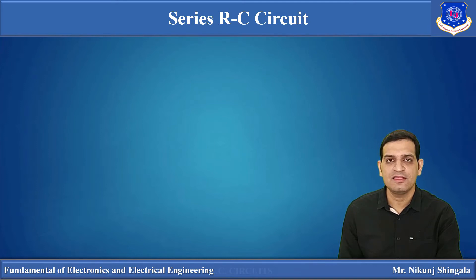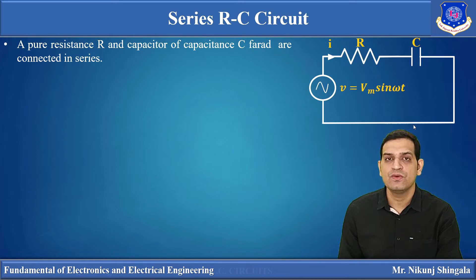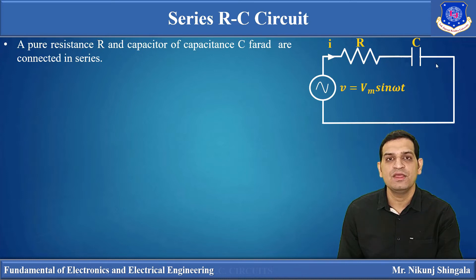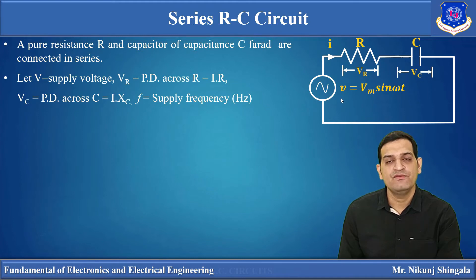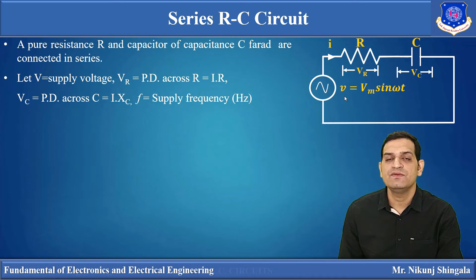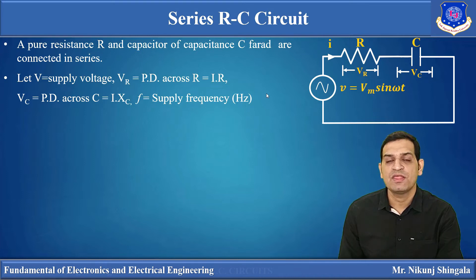The circuit is known as a series RC circuit because, as the name suggests, the circuit consists of two components: a resistor and a capacitor, both connected in series with an end-to-end connection. Across this series combination, one AC voltage source V is applied, and because of this, an instantaneous current I will start to flow. VR is the potential difference across the resistor given by I×R, and VC is the potential difference across the capacitor given by I×XC, where XC is the capacitive reactance.